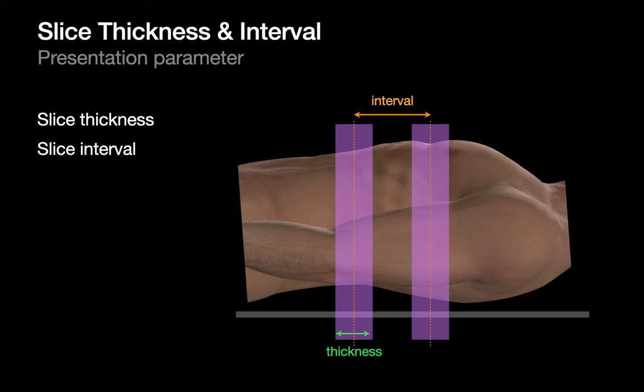We can also set the slice interval to be greater than the slice thickness. We do this explicitly for expiratory phase CT chest images obtained after a standard inspiratory phase acquisition. On non-contiguous expiratory CT imaging, we're looking for big-picture changes and don't need to re-irradiate 100% of the patient's anatomy, since we already have a complete inspiratory phase acquisition.